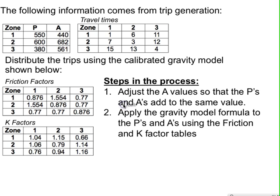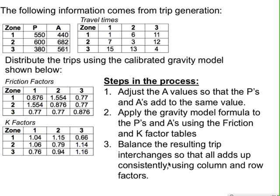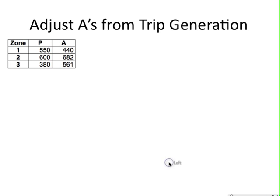The steps in applying the gravity model are: first, adjust the attraction (A) values so they add up to the production (P) values. Next, apply the gravity model formula to the P's and A's to generate a trip interchange matrix showing trips from each zone to every other zone. Then balance the resulting matrix, because it doesn't come out balanced from the equation.